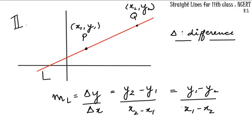What is the slope for such a case? Slope ml equals Δy upon Δx. Delta here means difference, so Δy means the difference in y coordinates and Δx means the difference in x coordinates. So it equals (y2-y1)/(x2-x1) or (y1-y2)/(x1-x2).